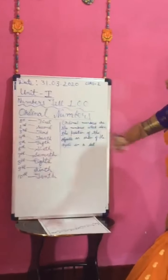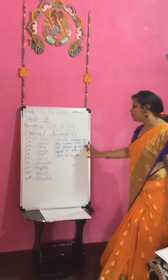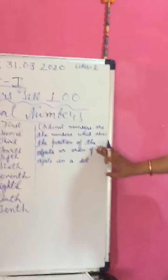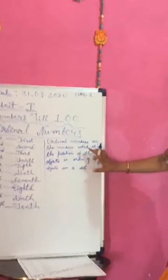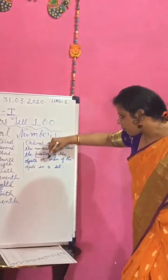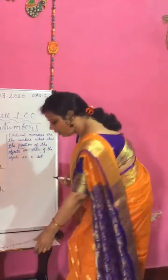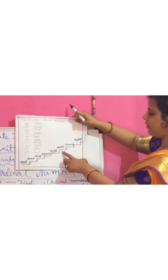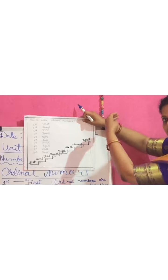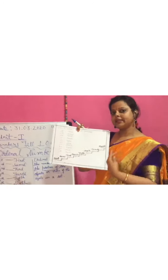Now, what are ordinal numbers? Ordinal numbers are the numbers which show the position of objects or the order of objects in a set. Here, the staircase shows 1st, 2nd, 3rd, 4th, 5th, 6th, 7th, 8th, and so on. Children, you can also draw this staircase and practice it at home.